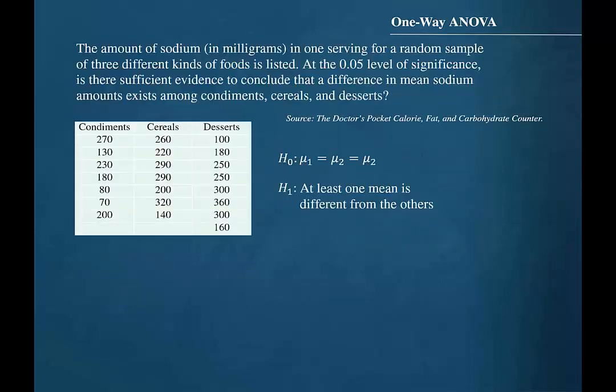So now let's return to the problem. The null hypothesis was that there was no difference between the population means. The alternative hypothesis stated that at least one mean is different from the others. The critical value is 3.52. The F-test value is 2.40.